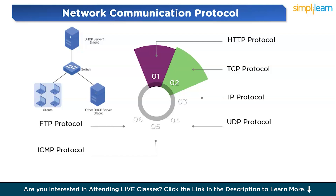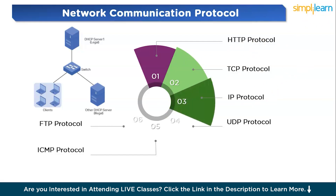TCP resends lost packets to ensure data integrity and provides flow control to prevent congestion. For example, when you download a file from the internet, TCP ensures that all parts of the file arrive in the correct order without corruption. So whenever you next download a file, remember the TCP protocol.